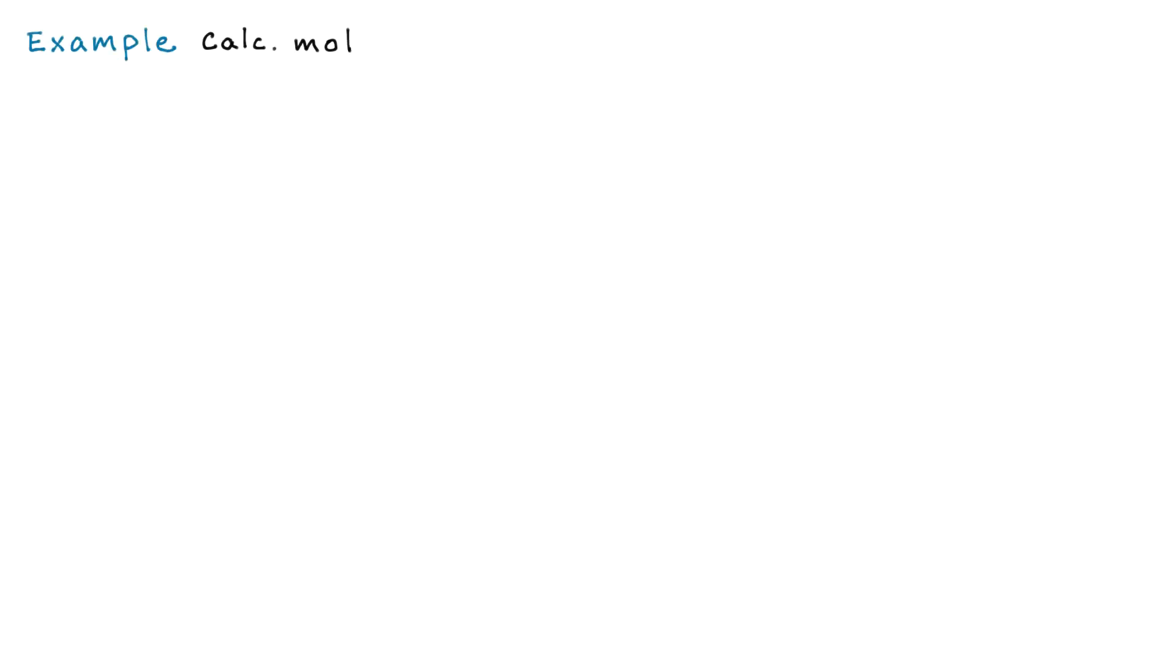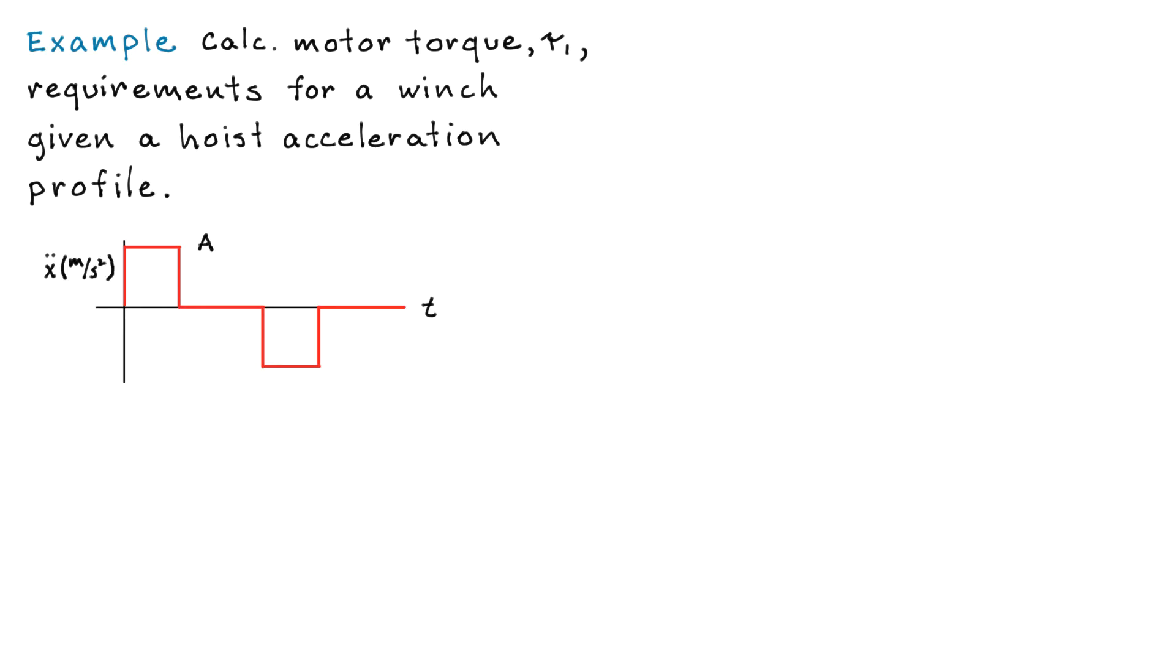Here's the example. We're going to have a winch that's driven by the gear train that we just analyzed. And what we'll need to do is determine the motor torque needed to achieve a certain acceleration profile of the load. And here's the acceleration profile. It's just a pulse, coast, pulse.